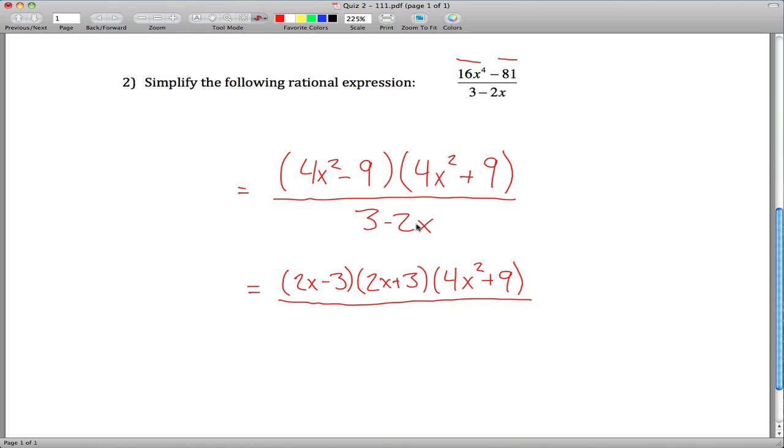And then if you look down on the bottom, 3 minus 2x, it'd be nice to cancel that out. We got 2x minus 3, which is really similar but not quite the same. So the trick is you pull out a negative 1 and you can change 3 minus 2x to 2x minus 3. So that right there ends up being the most factored form. You got a 2x minus 3 on the top and a 2x minus 3 on the bottom.